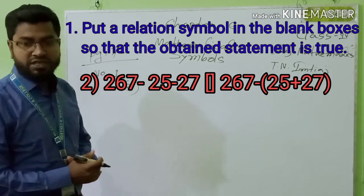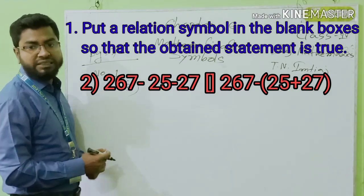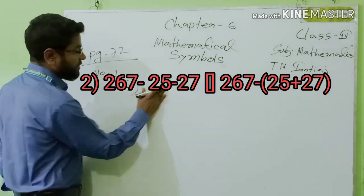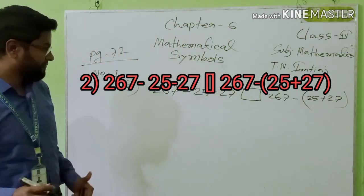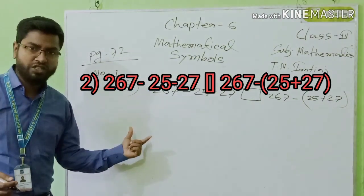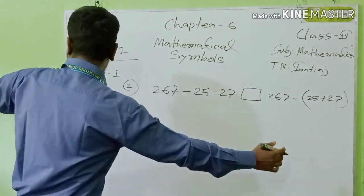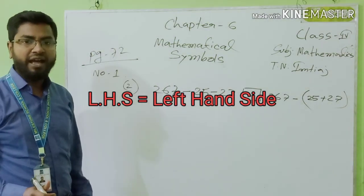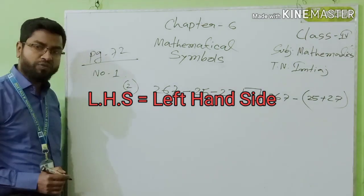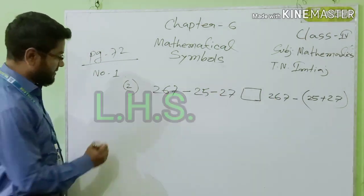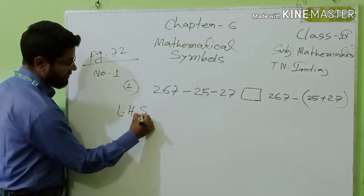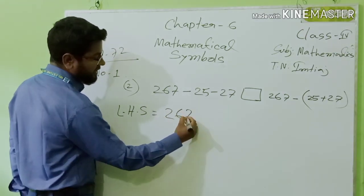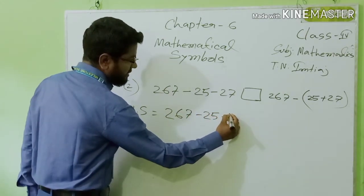See this part. What is this part called? Look, this is my left side, this is my right side. So this part is called left hand side — in short form we can write LHS. This part will be 267 minus 25 minus 27.